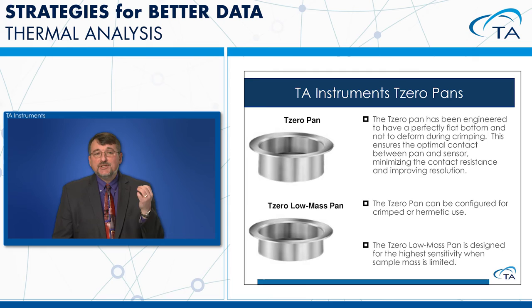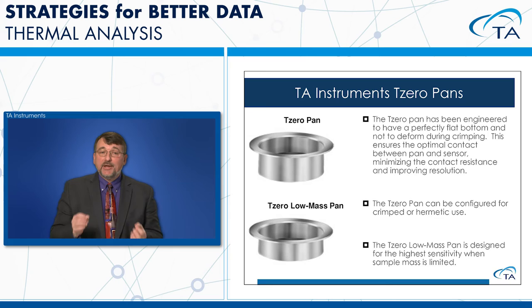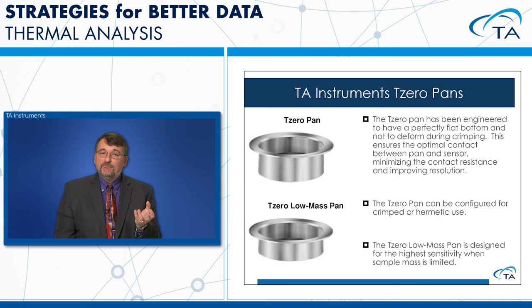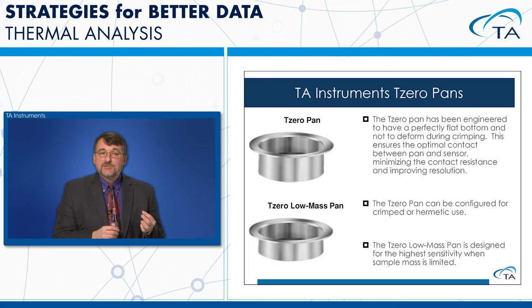The T0 pans from TA Instruments have been engineered with an extremely flat bottom that sits on the flat sensor, giving the best thermal contact and performance. The pans start flat and remain flat even after loading a sample and lid. T0 pans can be configured with a standard crimped lid or a hermetic sealed lid to keep volatiles in. There is also a low-mass T0 pan for very low-mass and thin samples.